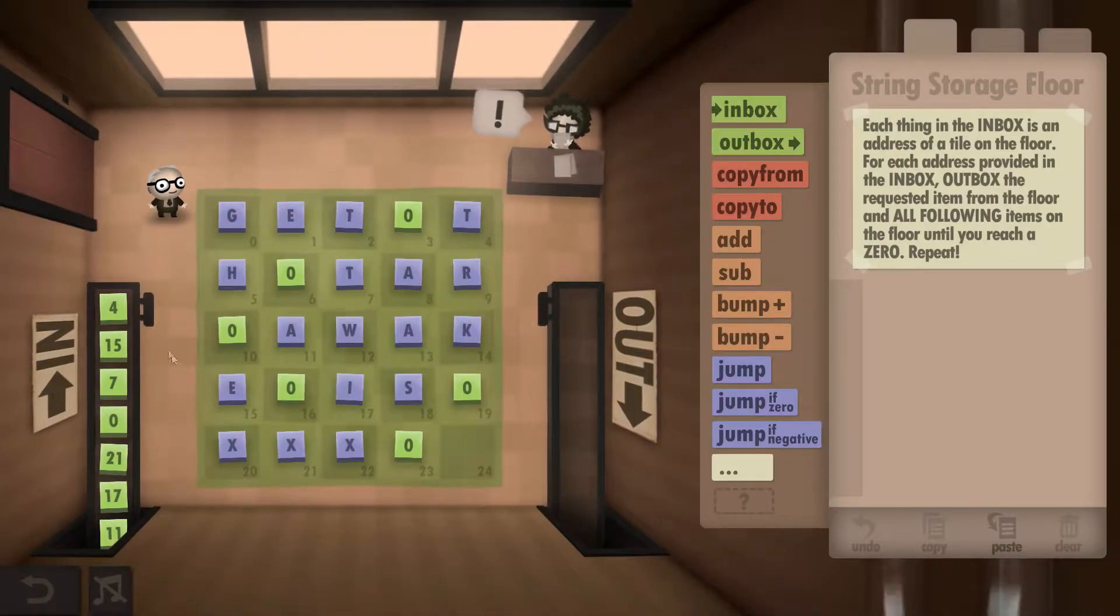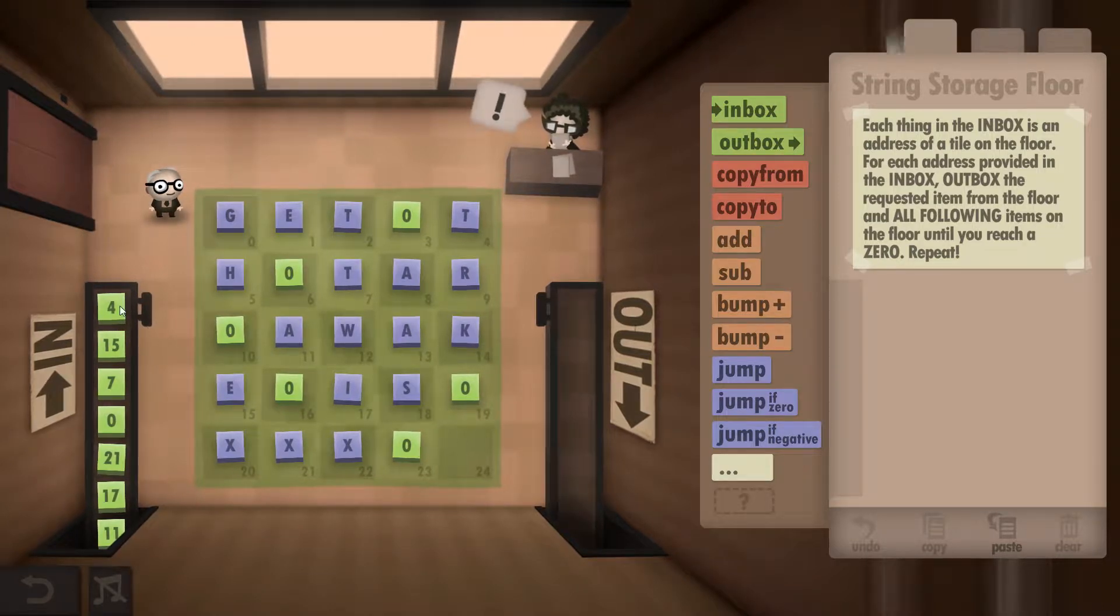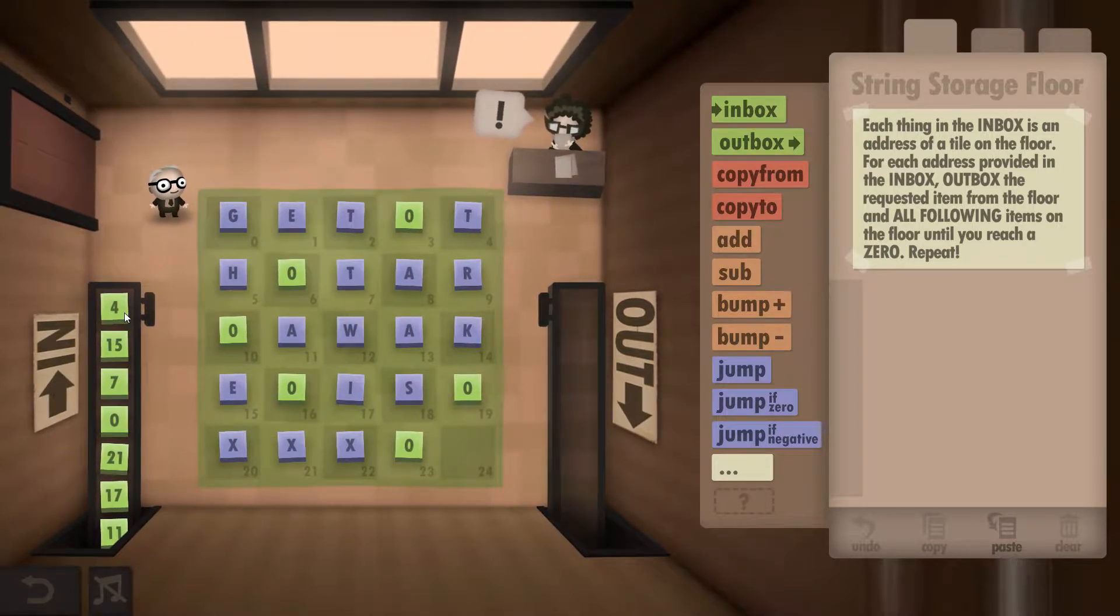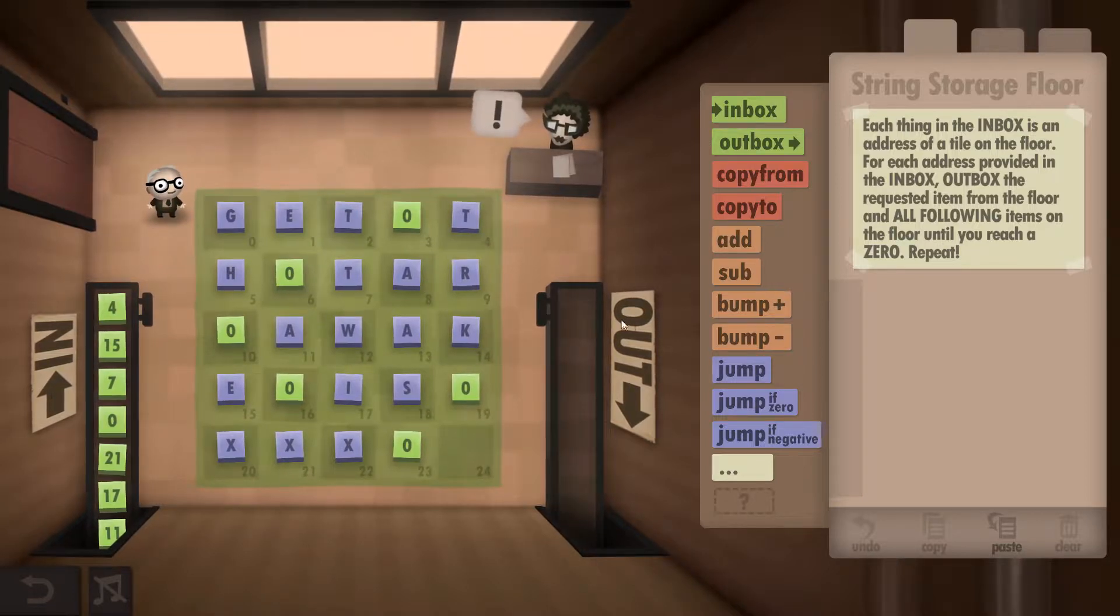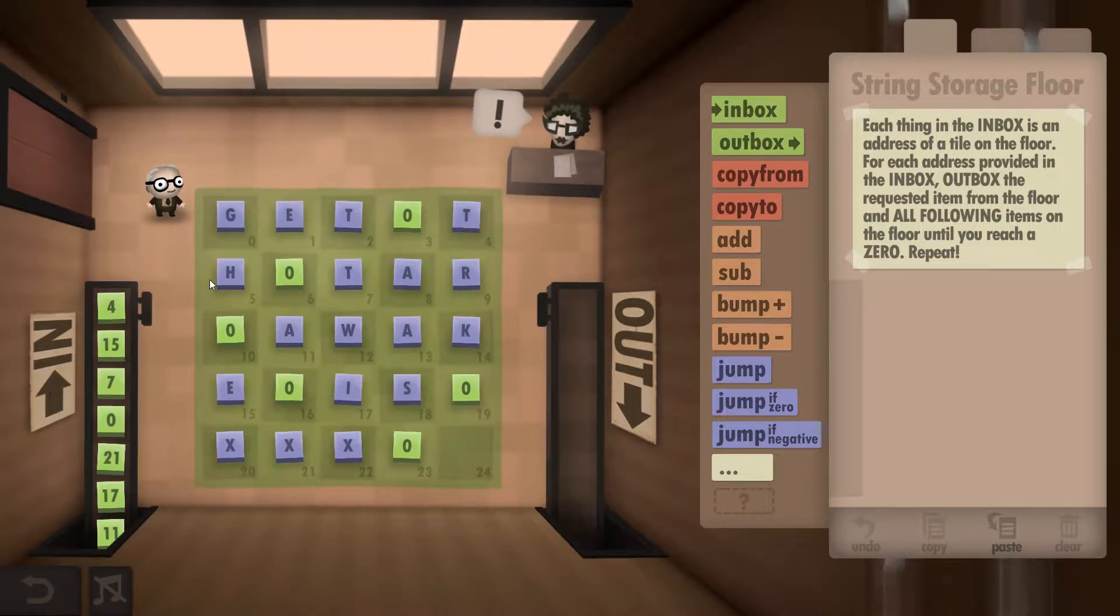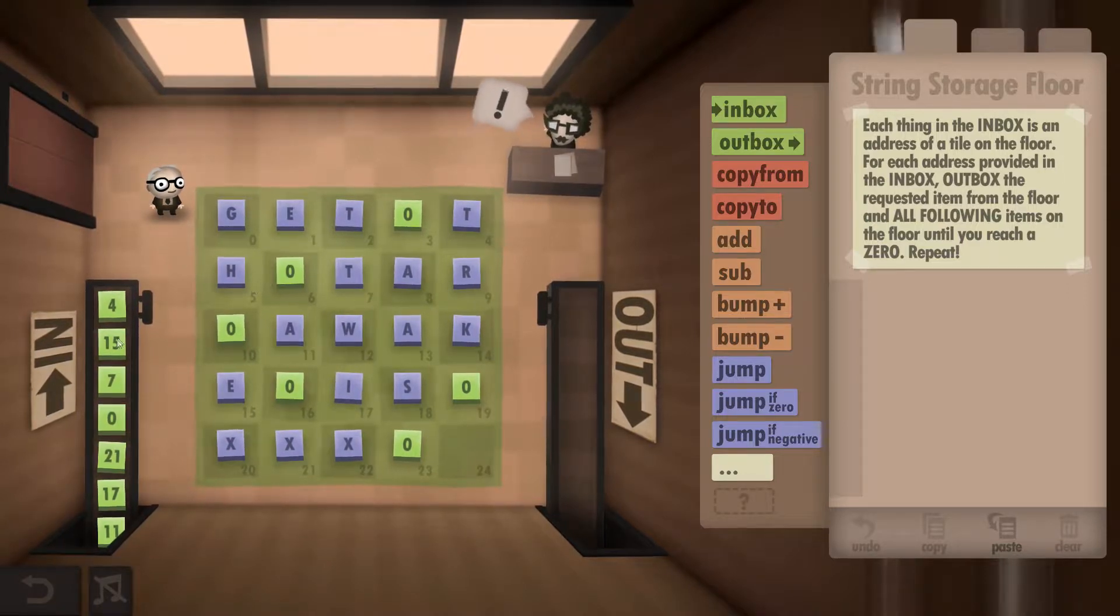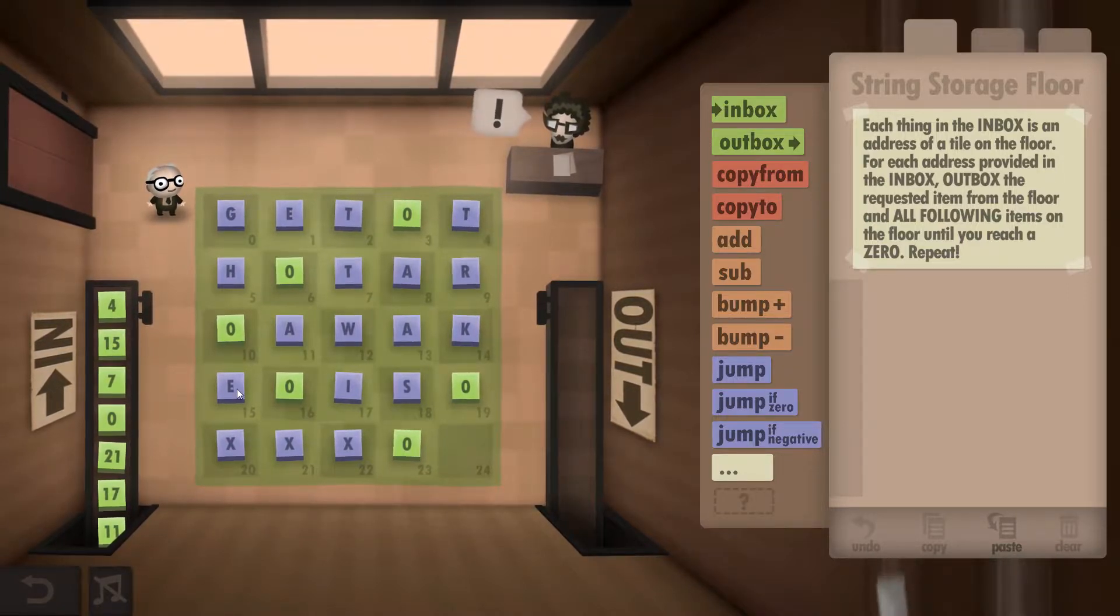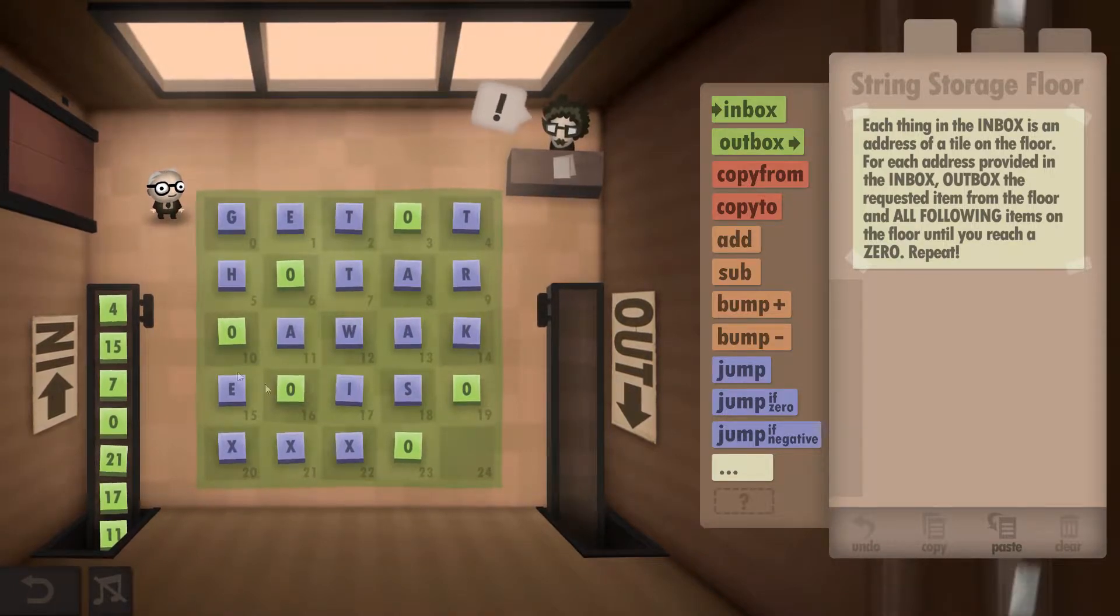What we need to do is grab a number from the inbox and find every single letter from 4 upwards until we hit a 0 and we're going to output them. So in this case the 4 will output a T and a H and not the 0. Then we'll grab the 15 so we'll output an E and nothing else and so forth.